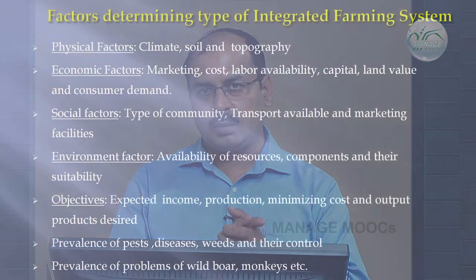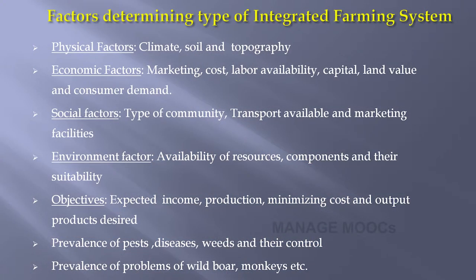In economic factors, particularly marketing, cost, labour availability, capital, land value, and consumer demand need to be taken into consideration. In social factors, the type of community, transport availability, and marketing facility are considered. In environmental factors, the availability of resources, components, and their suitability are the major sub-components to examine when recommending the integrated farming system.